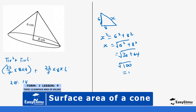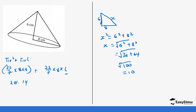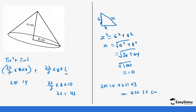The square root of 100 is 10, so our slant height l = 10. Now we calculate the curved surface: 22/7 × 8 × 10. So 22 × 8 × 10 = 1760, divided by 7 gives us 251.43. Adding the two areas: 201.14 + 251.43 = 452.57 centimeters squared.